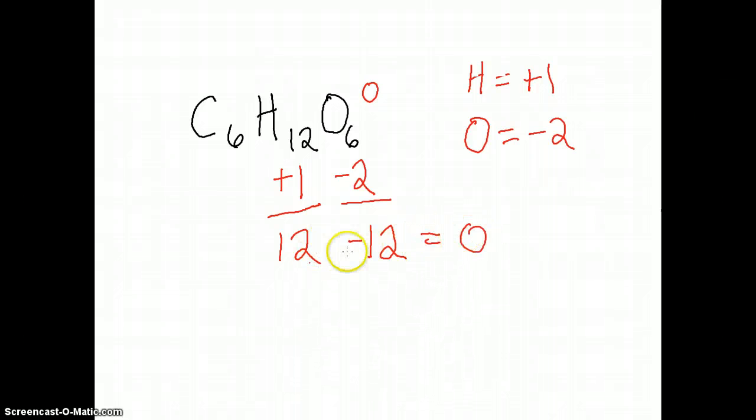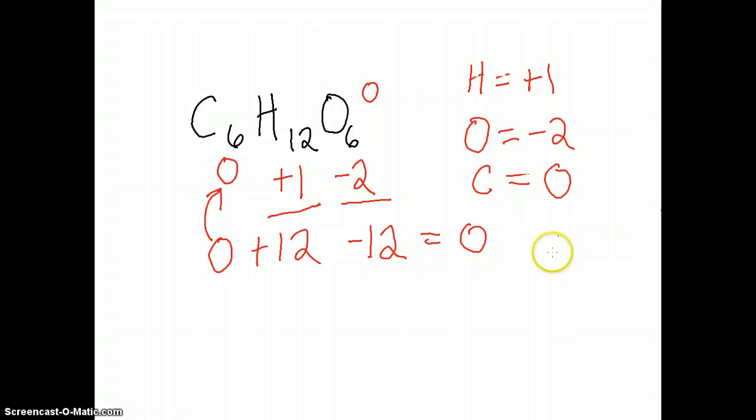All of these have to add up to the formula charge, which is 0. Right now if I add 12 minus 12, we have 0. That means the carbon must be 0 to add up to 0. If there are 6 carbons, then each must be 0. So carbon would be 0 oxidation state in this case.